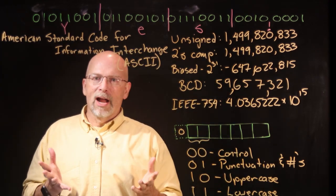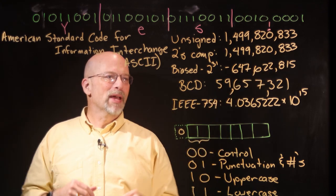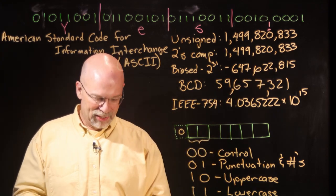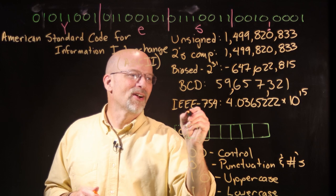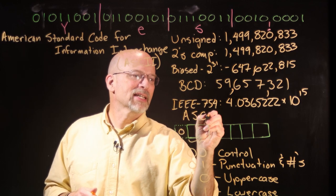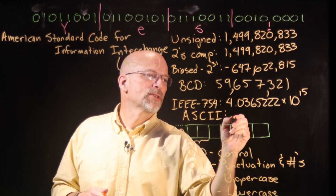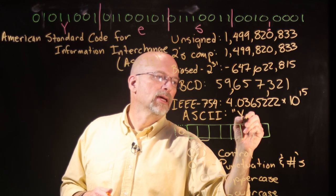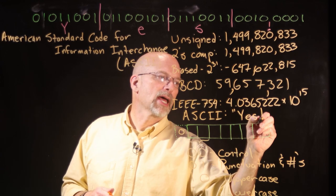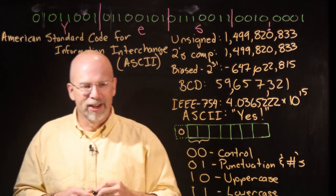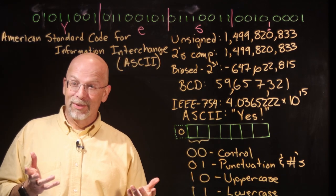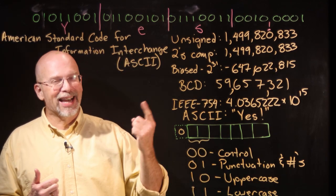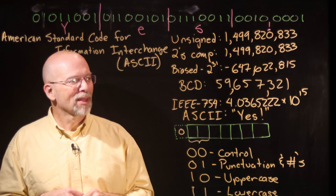Alright. So these 32 bits in ASCII represent the text string, capital Y, little e, little s, exclamation point. There you go. Could have represented that too, huh? Kind of looks like it did.